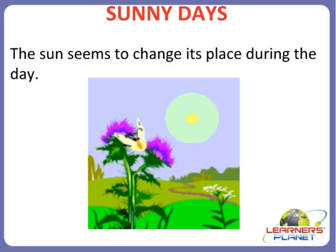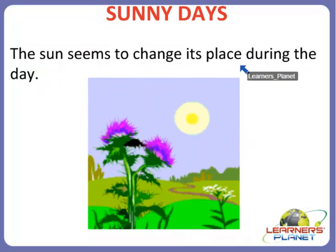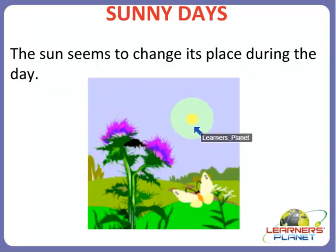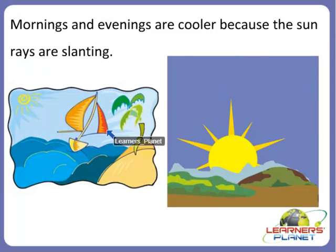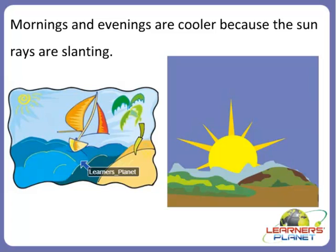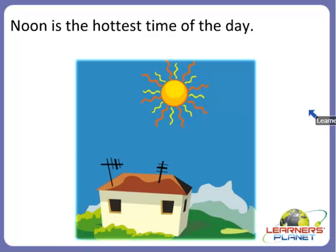Now let's study about sunny days. The sun seems to change its place during the day. Mornings and evenings are cooler because the sun rays are slanting. You can see in the picture — mornings and evenings are cooler because the sun rays are slanting.